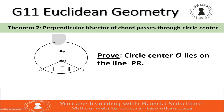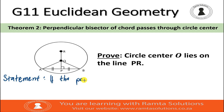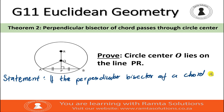The statement of this theorem says: if the perpendicular bisector of a chord is drawn, then the line will pass through the center of the circle.